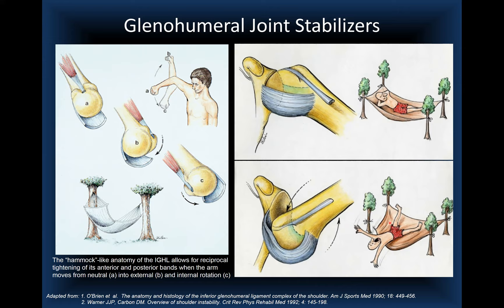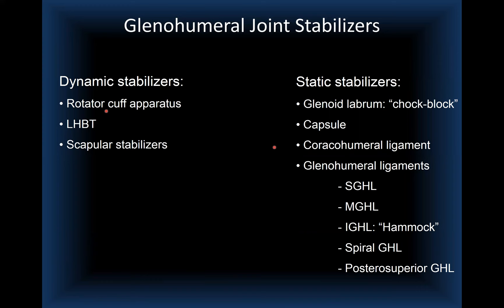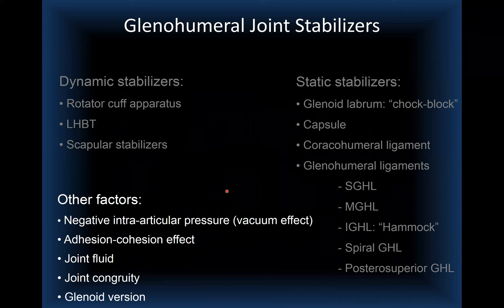Other factors contributing to glenohumeral joint stability include the negative intra-articular pressure from a vacuum effect, the adhesion-cohesion effect from a small amount of fluid within the joint, and normal joint congruity. The geometry of the glenoid and humeral head and the glenoid version are important concepts particularly relevant to posterior and multidirectional instability.